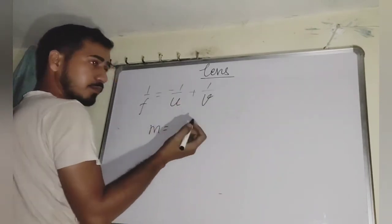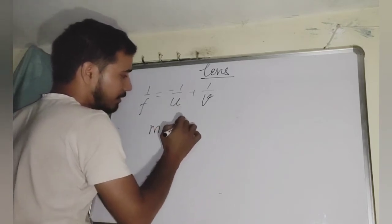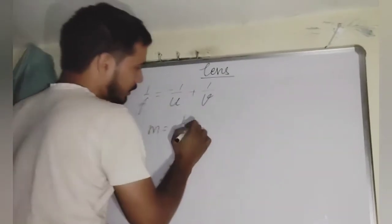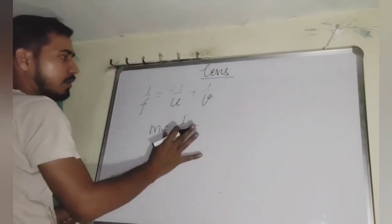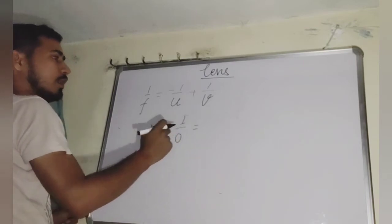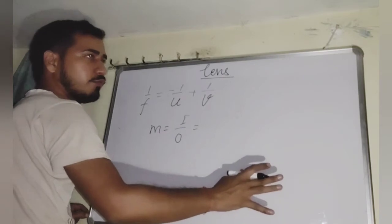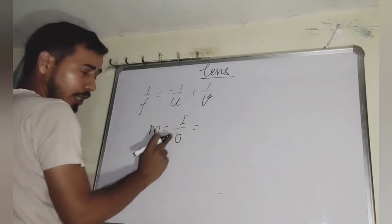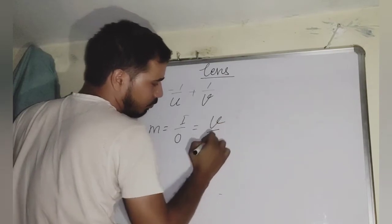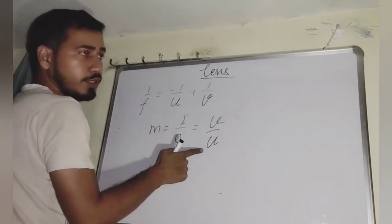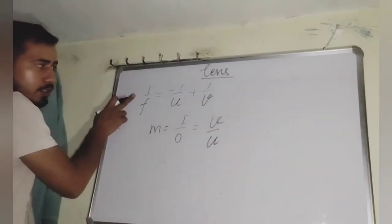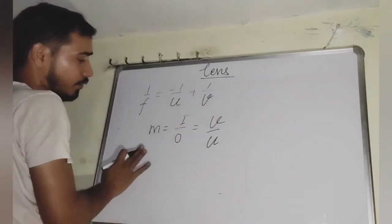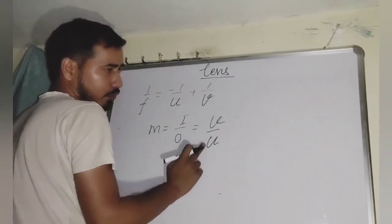If we talk about magnification, it is the ratio of the height of the image to the height of the object: m = i/o. By solving geometrically for image formation by a lens, it comes out that magnification m = i/o = v/u (note: this was −v/u in the case of a mirror). So remember: lens equation is 1/f = −1/u + 1/v, and magnification is m = i/o = v/u.